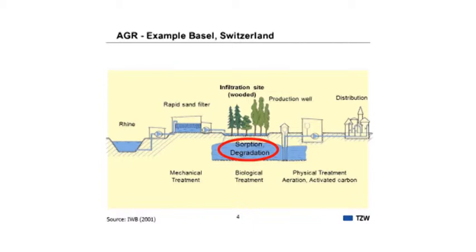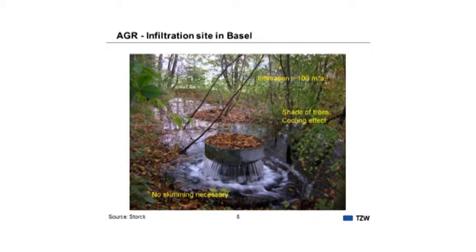You can see the water is just ponded there on these sites. There is typical vegetation adapted to wet conditions, and the trees and bushes provide positive effects — for example, the water is cooled, which is important in summer. The infiltration rates are very high, more than 100 meters per year. It is a very sustainable system: you don't have to remove the surface of the infiltration ponds. Biological activity — earthworms and bacteria — prevents clogging, so the infiltration capacity is sustainable.